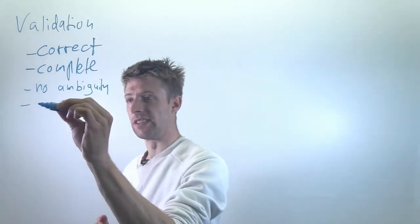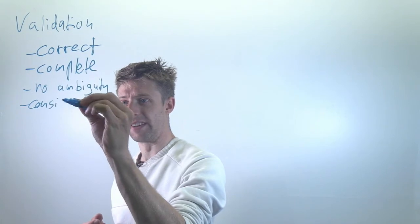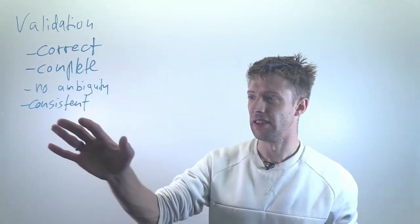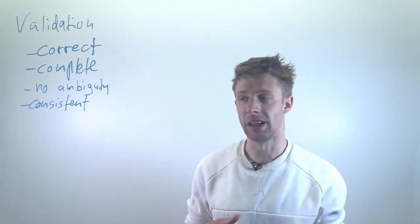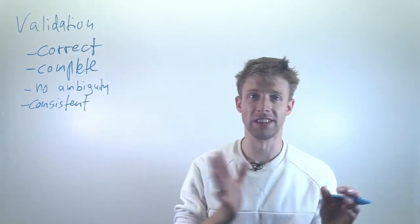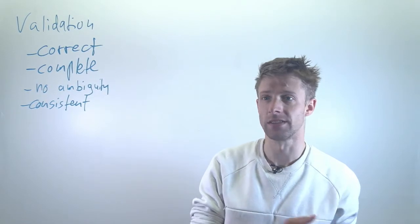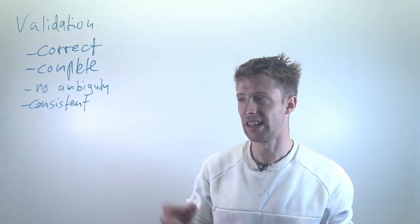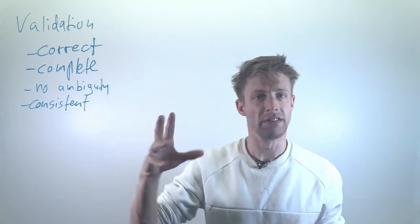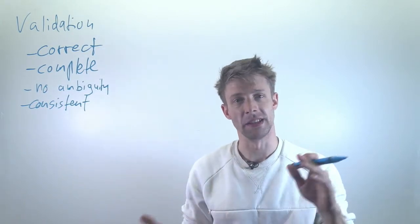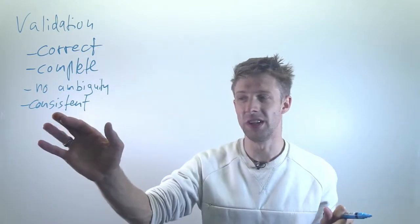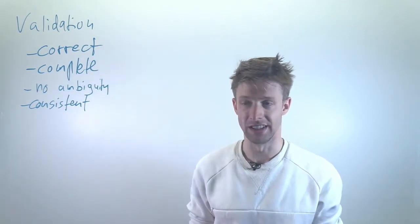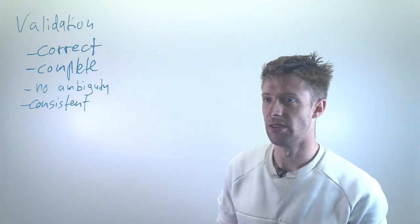They should be consistent, all requirements together. For instance, if it says somewhere the response time should be less than 300 milliseconds and somewhere else it says the response time should be at least 300 milliseconds, that would be inconsistent. It would probably also be meaningless. But in practice, even in the functional requirements as the specification gets large, it's really hard to make sure that you don't have things that are contradicting each other. So this is something you need to check.